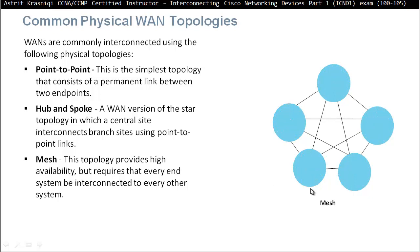A better option would be mesh topology. This topology provides high availability but requires that every end system be interconnected to every other system. We connect every site with every other site. The availability will be there because it doesn't matter if one of the sites fails — everybody else will still be able to communicate. But the disadvantage is that it's going to have loads of connections, and you're going to have to pay extra money for wide area network connections between the sites.